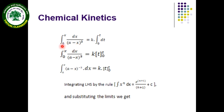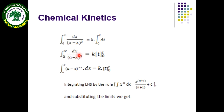Substituting these limits, integration is carried out. The integration sign runs from initial limit 0 to final limit x on the left-hand side. On the right-hand side, the initial time is 0 and k is a constant so it can be taken outside the integration. The integration of dt gives t, evaluated between limits 0 and t. Rearranging, (a minus x) raised to the power 3 in the denominator becomes (a minus x) raised to minus 3 in the numerator, with dx as usual.